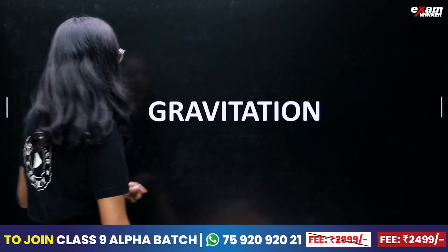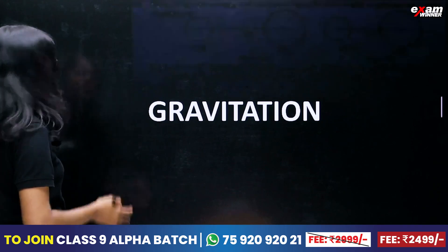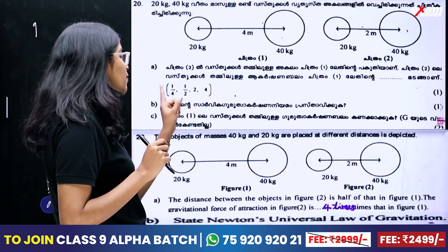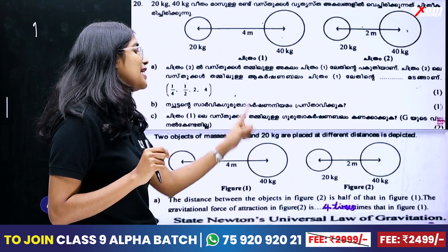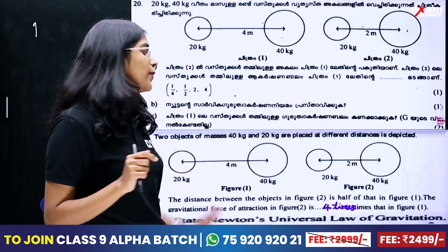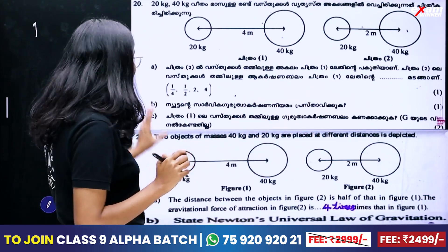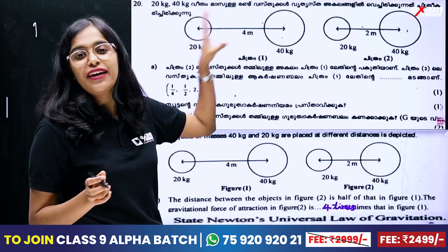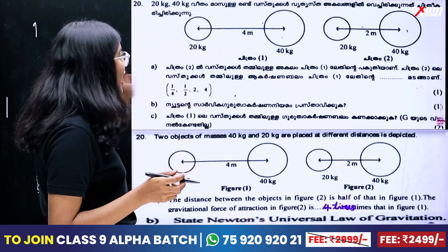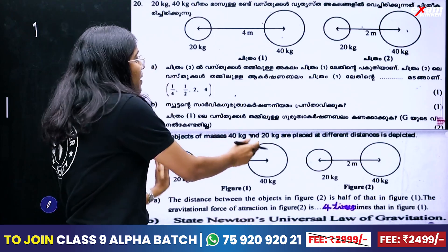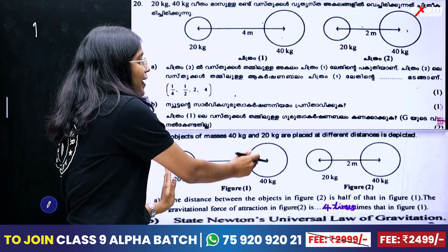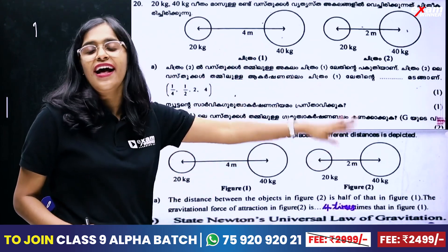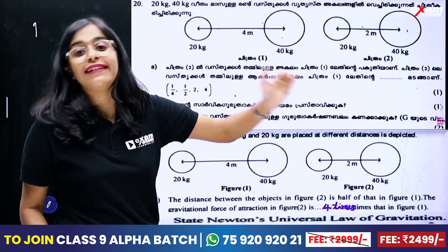If you are interested in the first question: two objects of mass 40 kg and 20 kg are placed at different distances. In 20 kg and 40 kg mass, they are placed at different distances. If you are interested in the distance, you will find the distance between them.